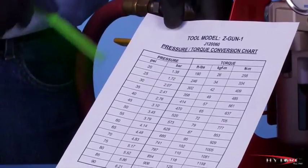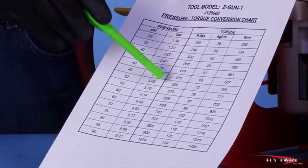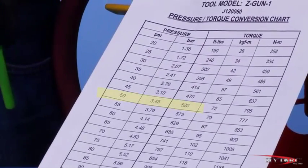Looking down the foot-pound column, we find 520 foot-pounds corresponds to 50 psi. You can interpolate the values if your torque goal is not shown exactly in the table.